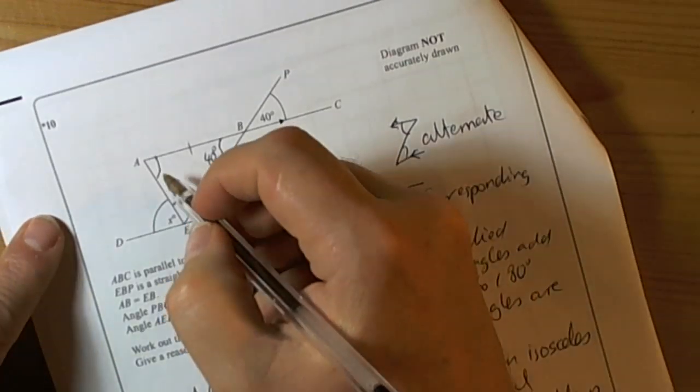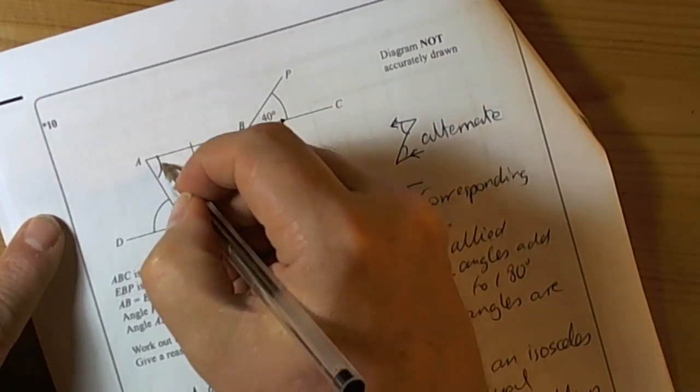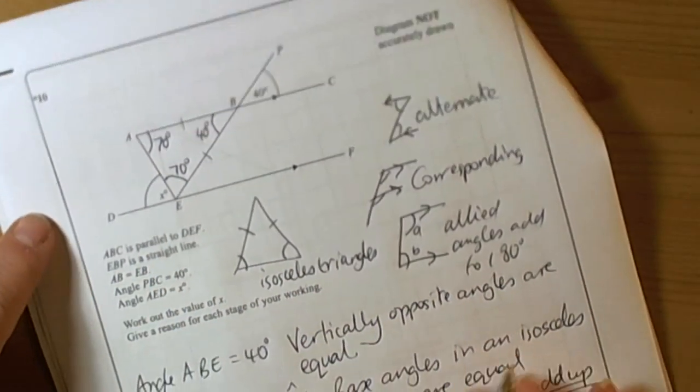So we now know, let's add this to the picture so we can see what we're doing as we're going along. So we've got 70 degrees, 70 degrees.